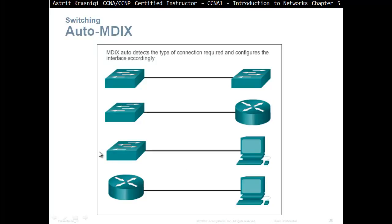Auto MDIX auto-detects the type of connection required and configures the interface accordingly. For example, if you connect two switches together, you normally need a crossover cable. But if the switches support Auto MDIX — which requires that duplex and speed are both set to auto — it will fix the cable type automatically; it doesn't matter whether you use straight-through or crossover. For switch-to-router or switch-to-PC connections, use a straight-through cable. If you connect a PC directly to a router, since a router is essentially an advanced PC, it's like connecting two PCs together — you need a crossover cable.